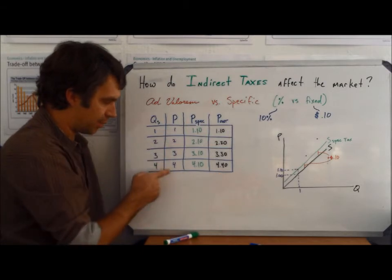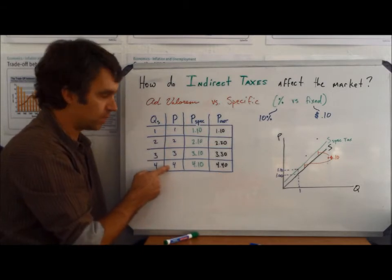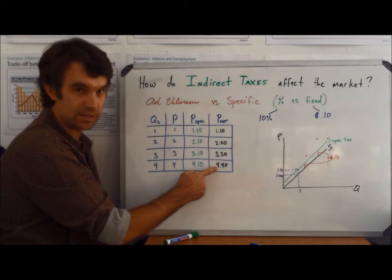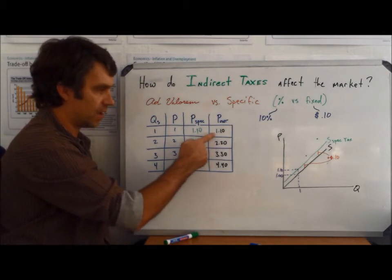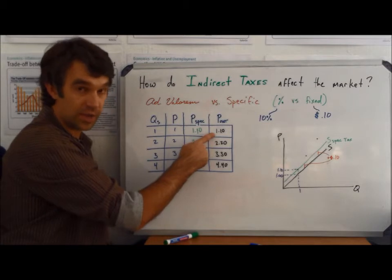That is, at a higher price of $4, the ad valorem tax raises price by $0.40, versus at a price of $1, the ad valorem tax raises the price by $0.10.